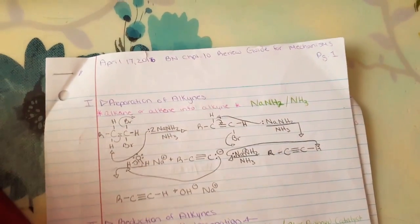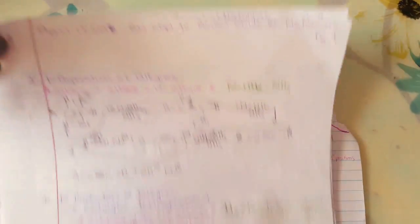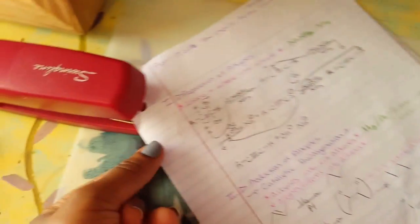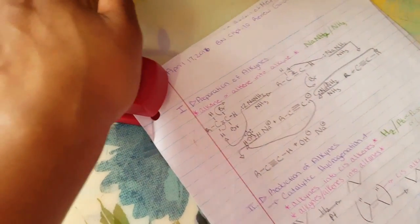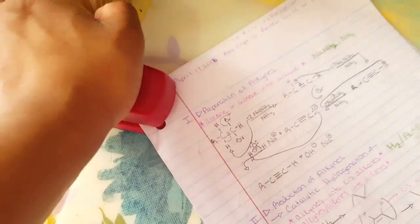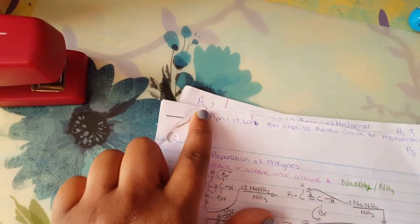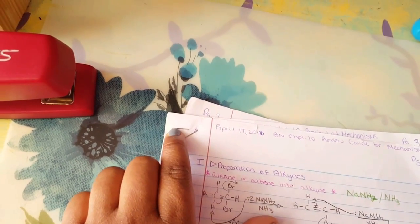When you're stapling your notes it's best to staple on the corner. When I say the corner I do not mean horizontal I mean diagonally. When I staple I prefer to staple diagonally but also closer to the edge.